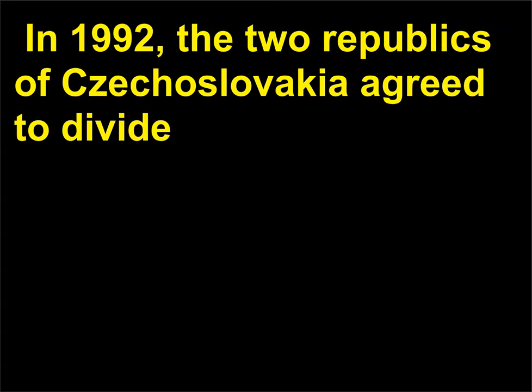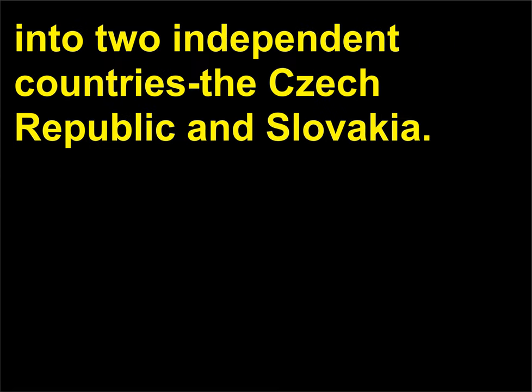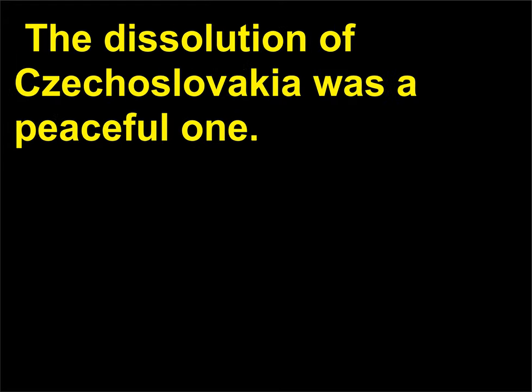In 1992, the two republics of Czechoslovakia agreed to divide into two independent countries: the Czech Republic and Slovakia. The dissolution of Czechoslovakia was a peaceful one.